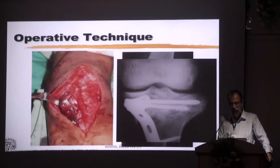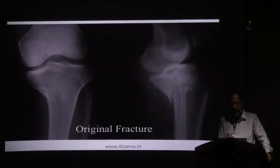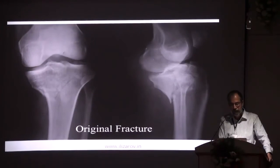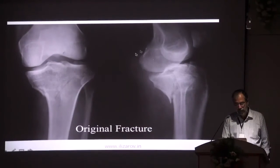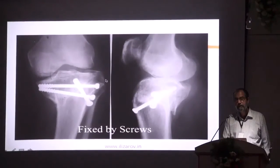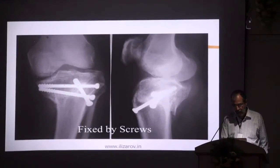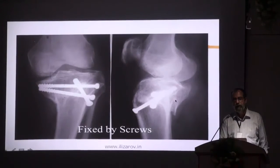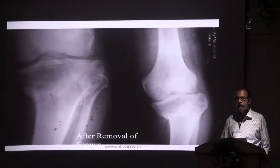Your alignment is good and your articular surface is restored. This guy was referred for a high tibial osteotomy. This is what used to be the problem a few years ago — this was done eight years ago. One issue was the use of screws to achieve the MIPO technique, but MIPO also has to be a stable fixation. The other issue was our lack of recognition of the posteromedial fragment, which today we recognize. This is how he healed after removal of the screws.